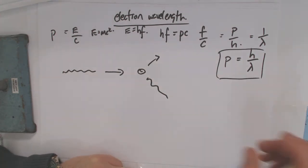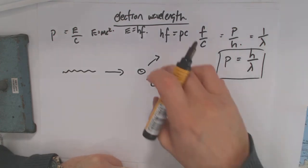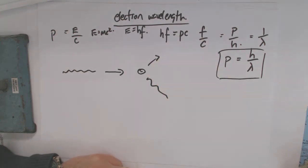Now, depending on, you know, we have this whole conservation of momentum thing. So depending on how the angle of the scattering, a certain amount of momentum will have been gained by the electron and lost by the photon.